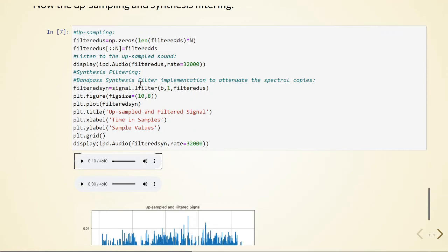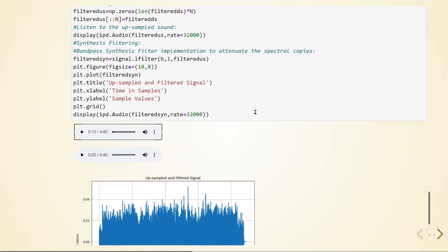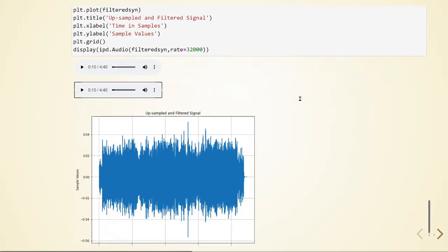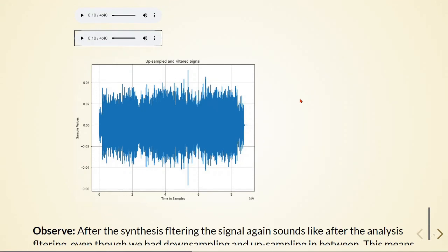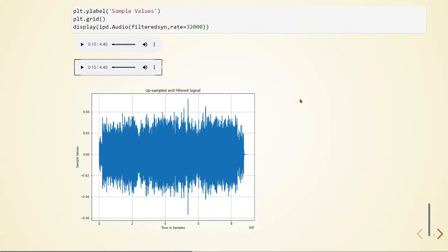Then we will apply the synthesis filter to attenuate the spectral copies. And we end up with... And just reminding that this is just for one subband and we can do this to all subbands, but this is just an example for one subband.